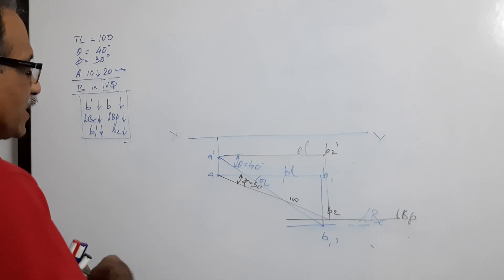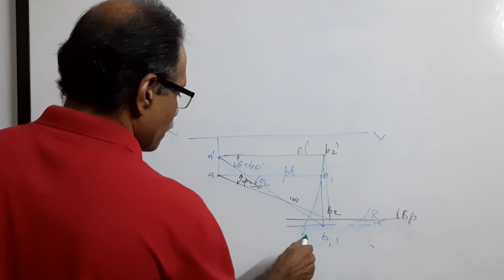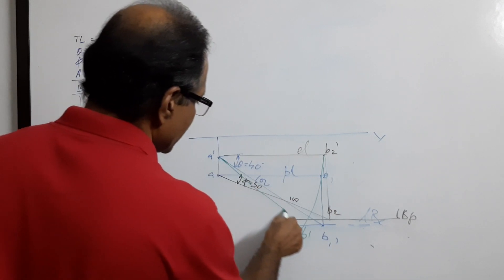Draw A dash as center, elevation length as radius, cut L B dash. A dash B dash is the elevation.